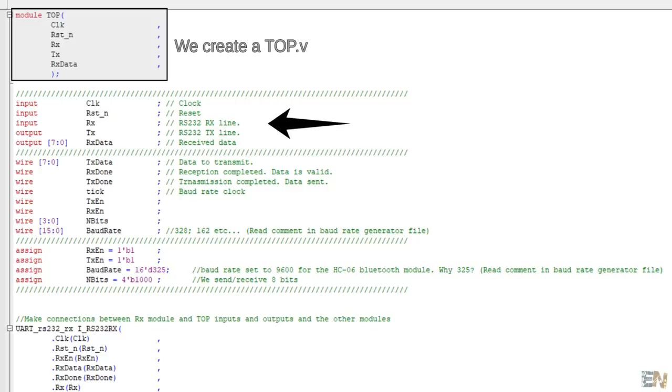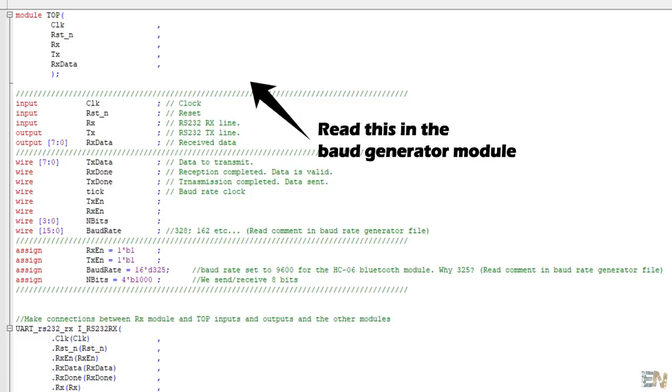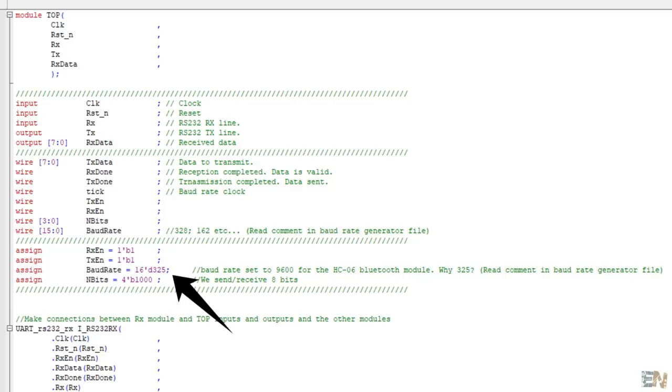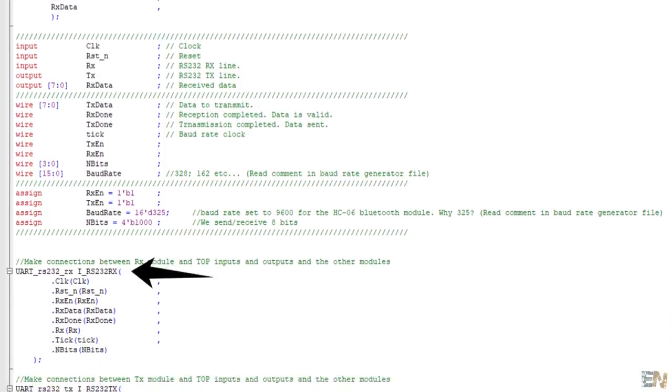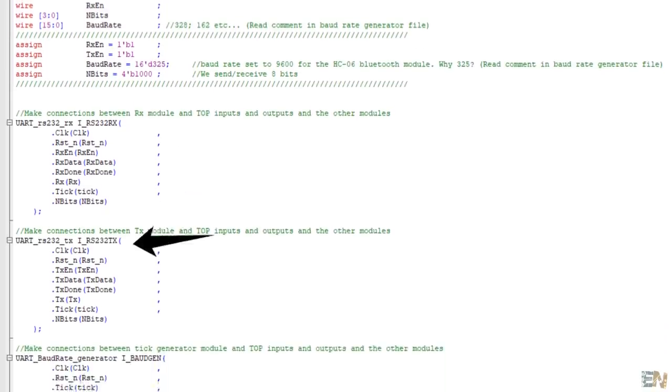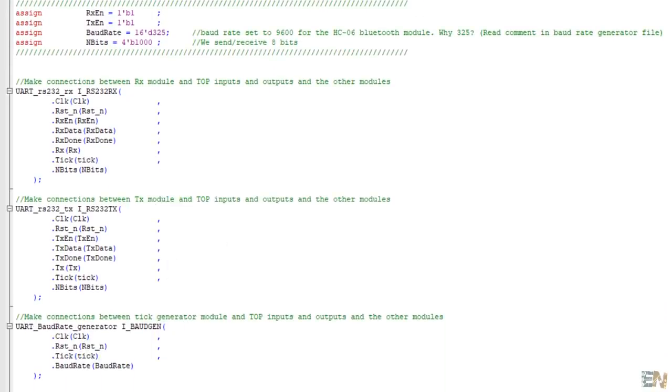We create the module and define the inputs and outputs. Now, I create a few wires to join the inputs and outputs from the small modules to the top inputs and outputs. We set the RX and TX to be always enabled. We also set the baud rate to 325 and you probably wonder why is that? Well, because we want 16 ticks with a frequency of 16 times 1 divided by 9600. But at a frequency of 15 MHz, in order to count 16 ticks, we need to count up to 325 clock pulses and that's why we use 325. Finally, with these definitions, we make the connections between the RX, the TX and the baud rate generator with the top inputs and outputs and that's it.